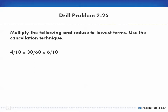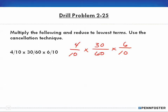So let me rewrite it here: four-tenths times thirty-sixtieths times six-tenths. The idea behind the cancellation technique is you're trying not to reduce within the fraction itself, even though you could. Using the cancellation technique means we're looking at numerators and denominators in a pair — not across all three — in order to work with smaller numbers.